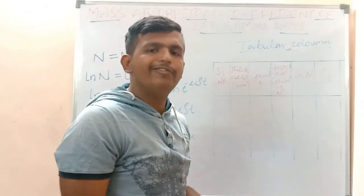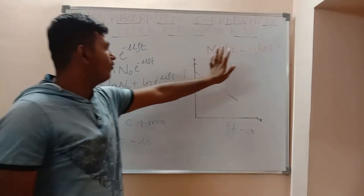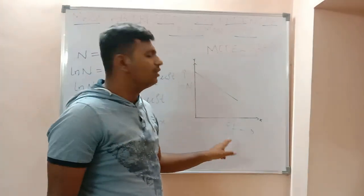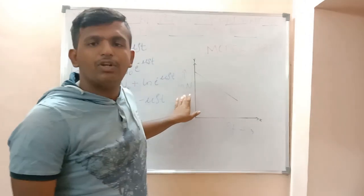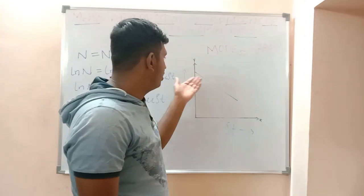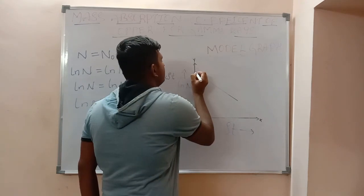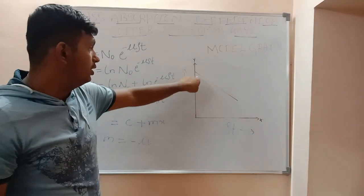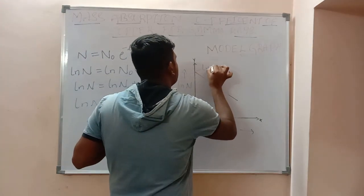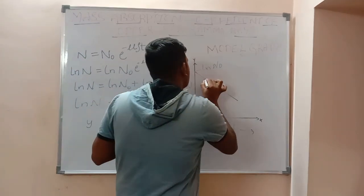Let's see how the model graph looks. We plot the graph between ln(N) and ρt, with ln(N) on the y-axis and ρt on the x-axis. The model graph shows a straight line. The y-intercept corresponds to ln(N₀).